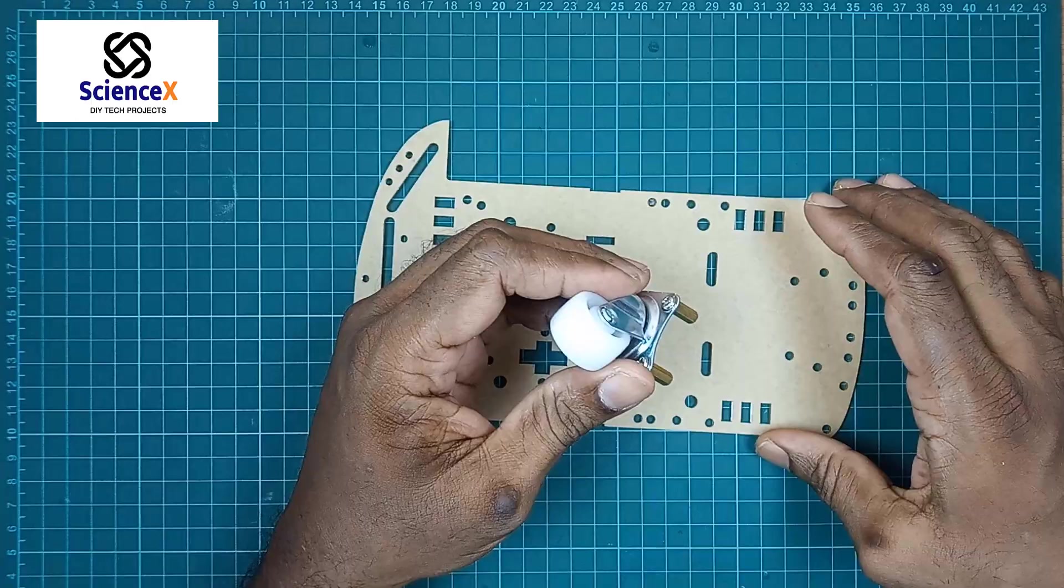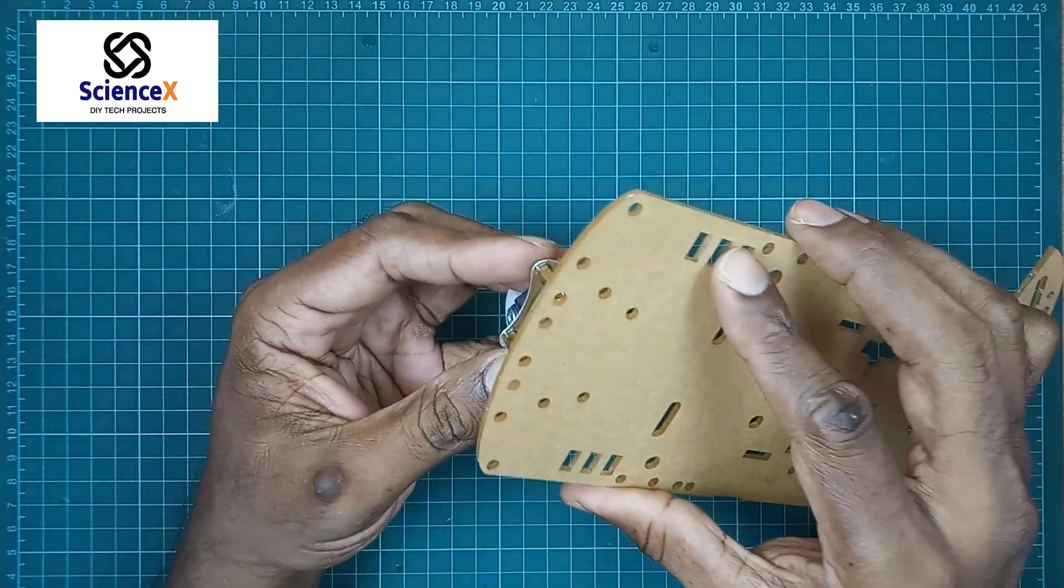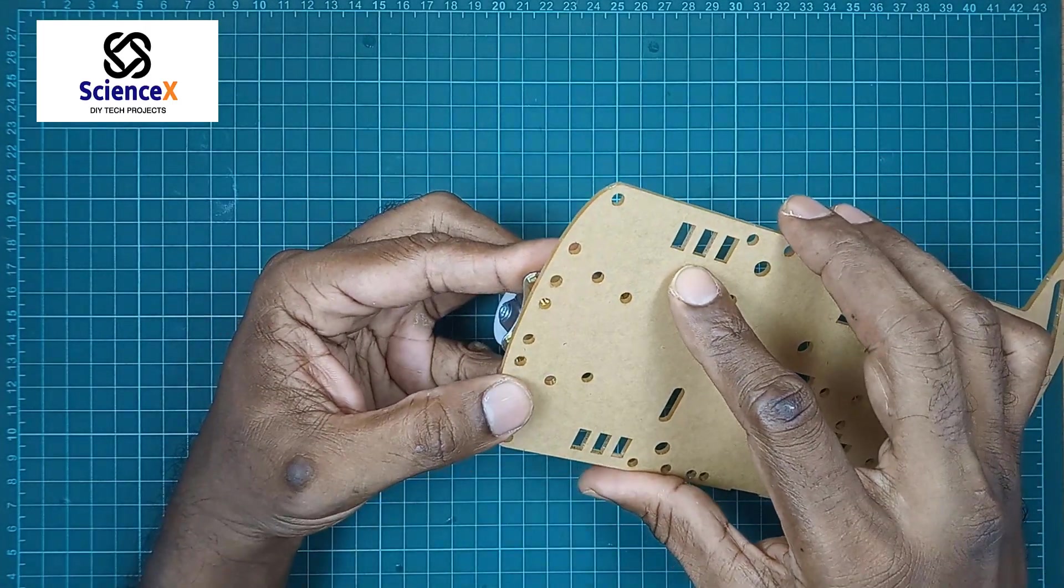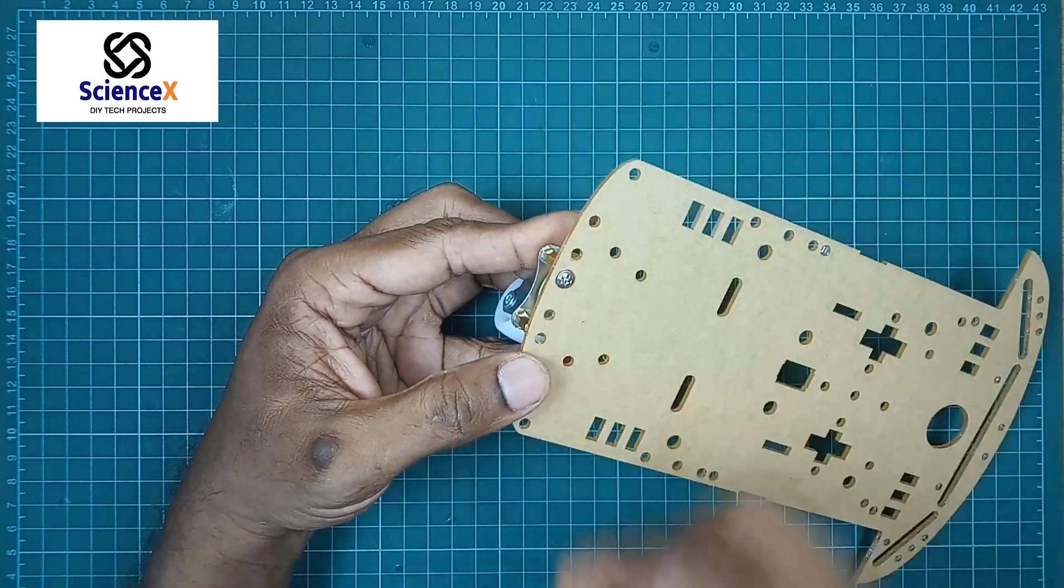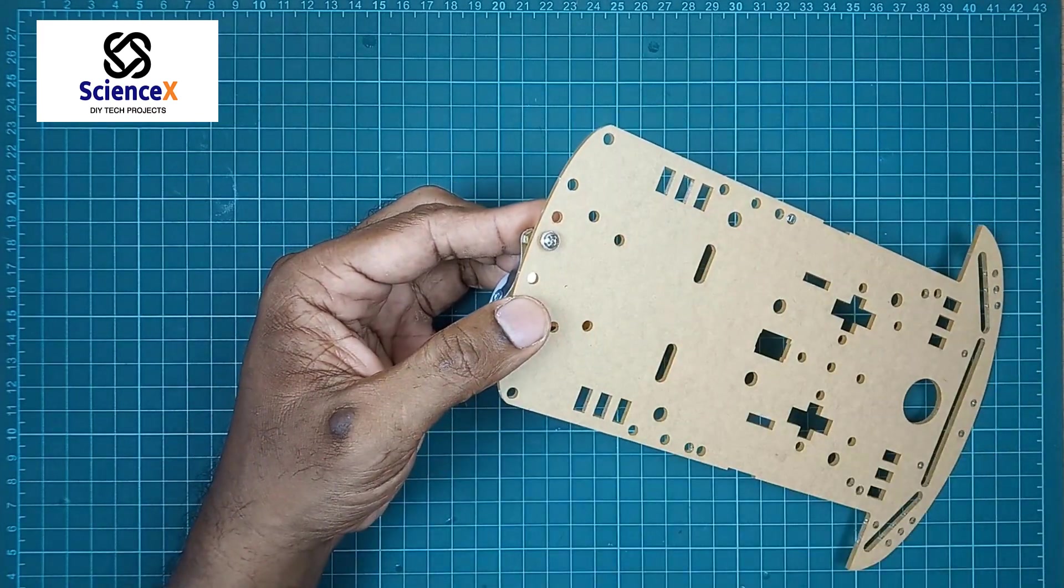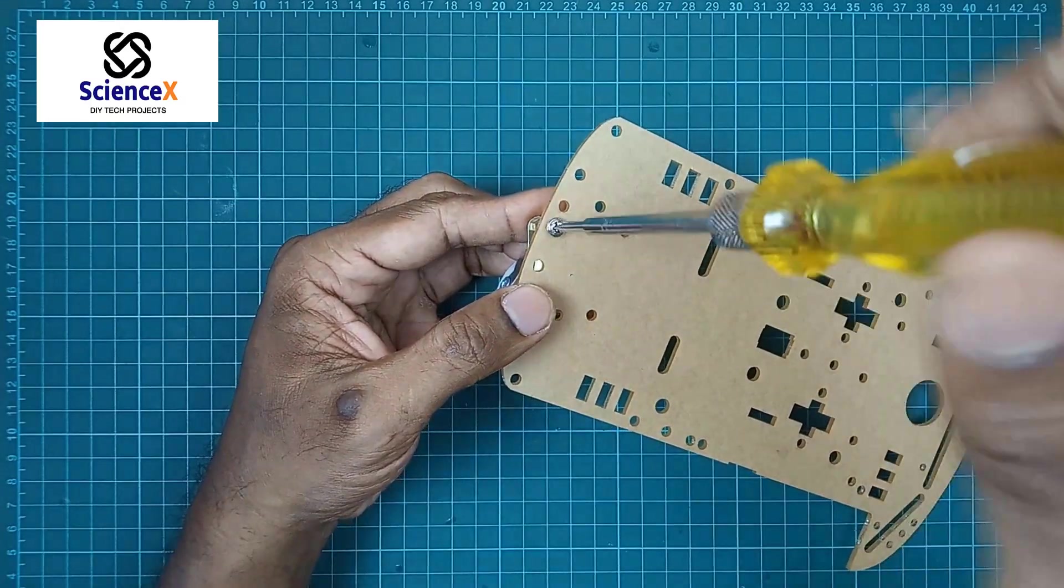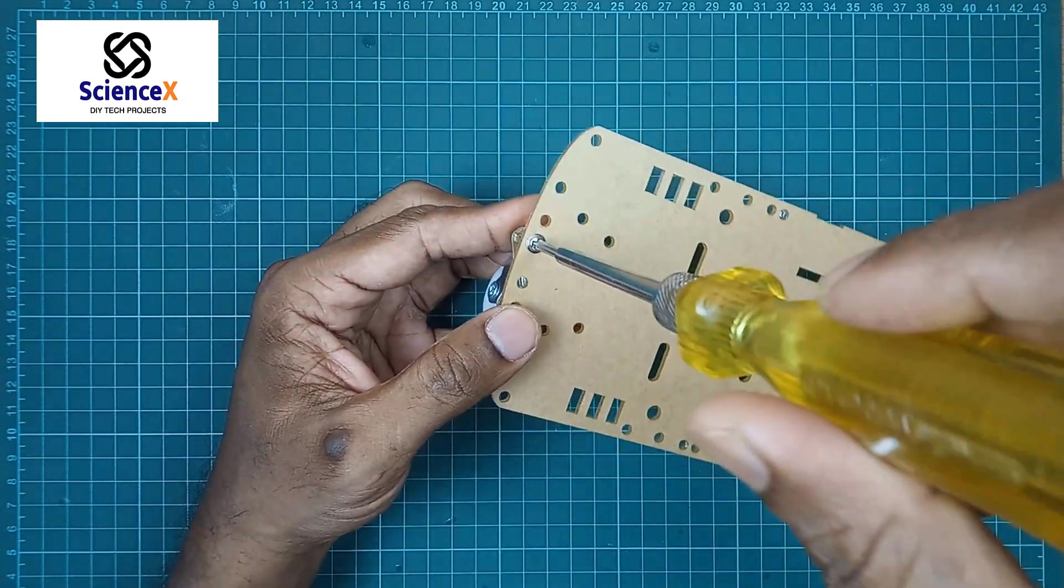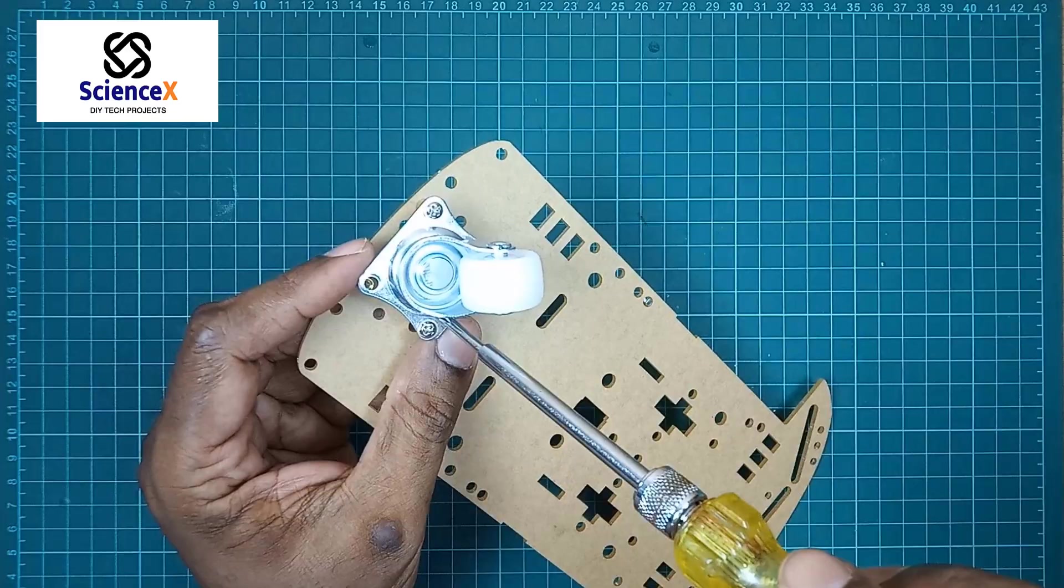So let's fix the components. First I take the caster wheel. Chassis kit available in the market. We can purchase. First we have to make the caster wheel fitting. So you have to choose the proper hole to connect the wheels and then only the screws will fit correctly.